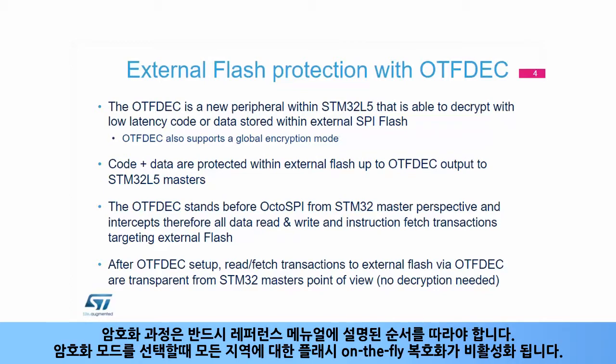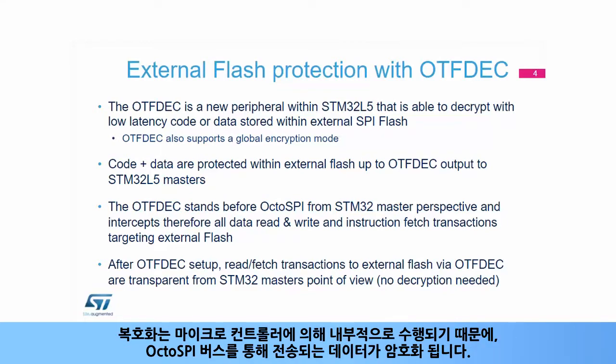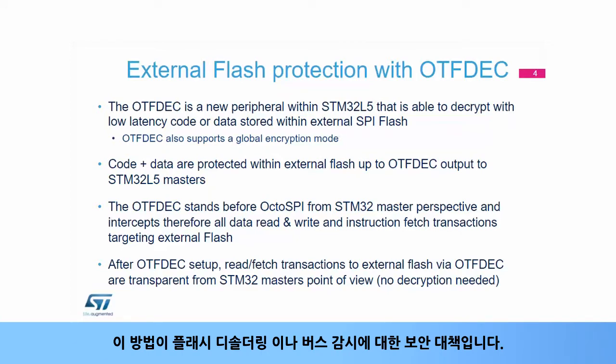The encryption process must follow the sequence described in the reference manual. When encryption mode is selected, flash on-the-fly decryption for all regions is deactivated. Since the decryption is done internally by the microcontroller, the data transferred over the OctoSPI bus is encrypted. This is a countermeasure against flash unsoldering and bus spying.